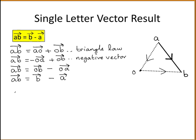So any two letter vector, for example XY, can be represented in terms of single letter vectors, so you can have Y minus X, or if you had the vector PQ, it's the second letter minus the first letter.